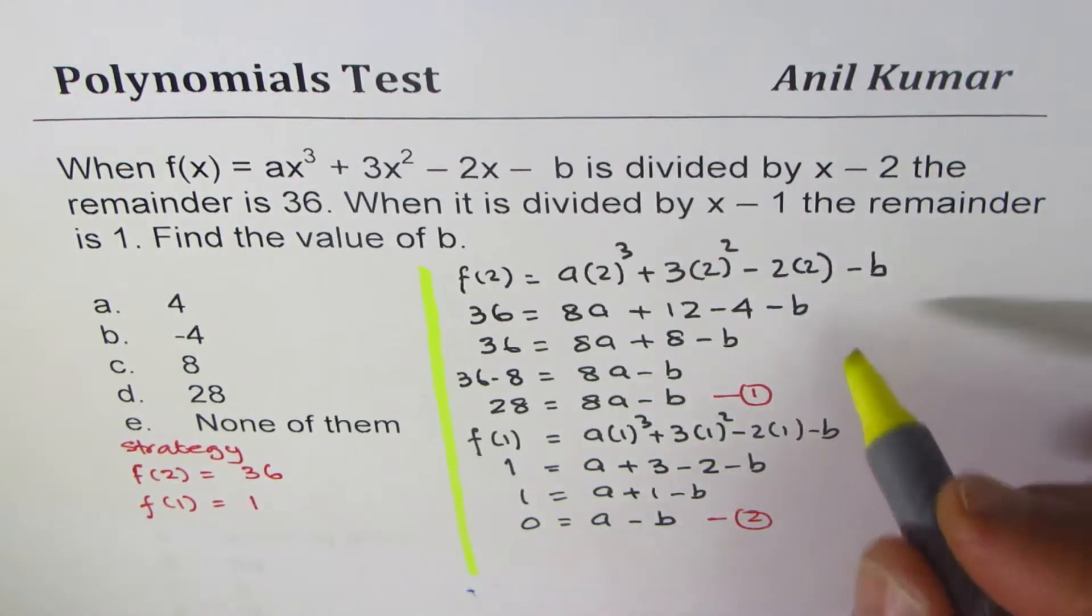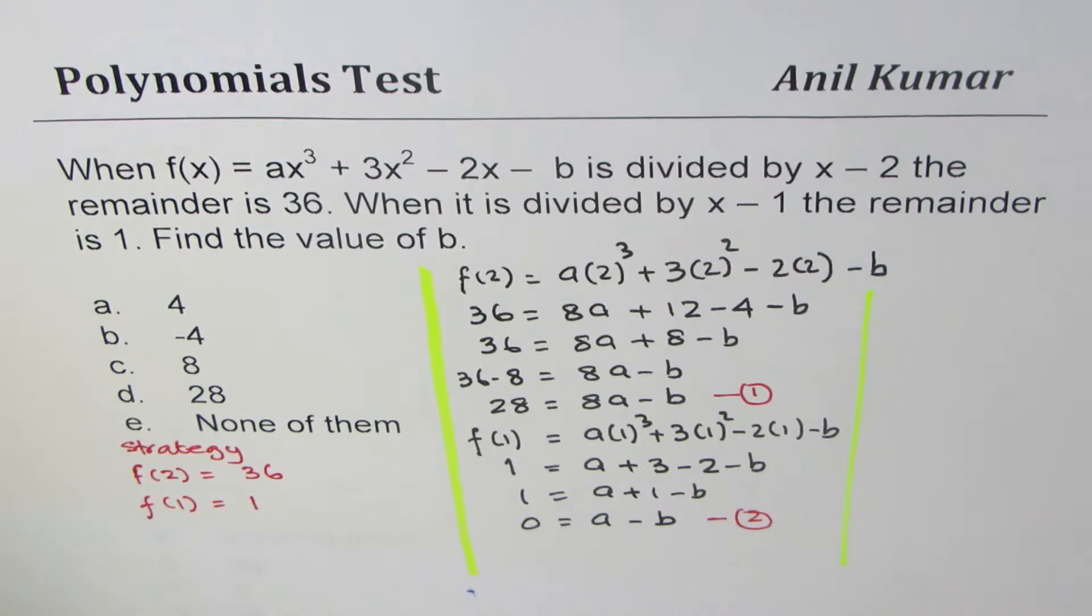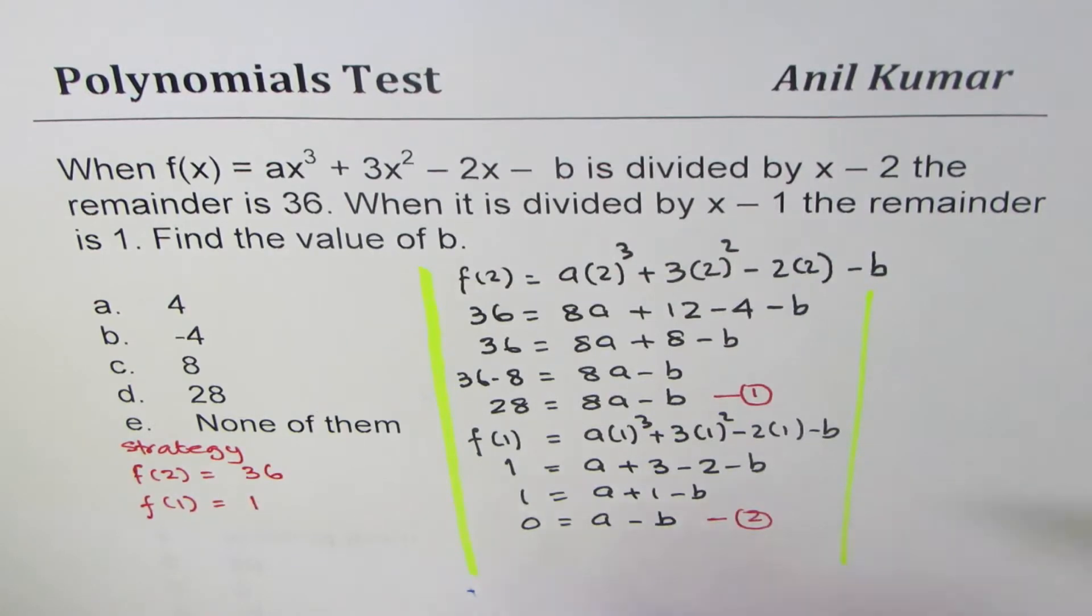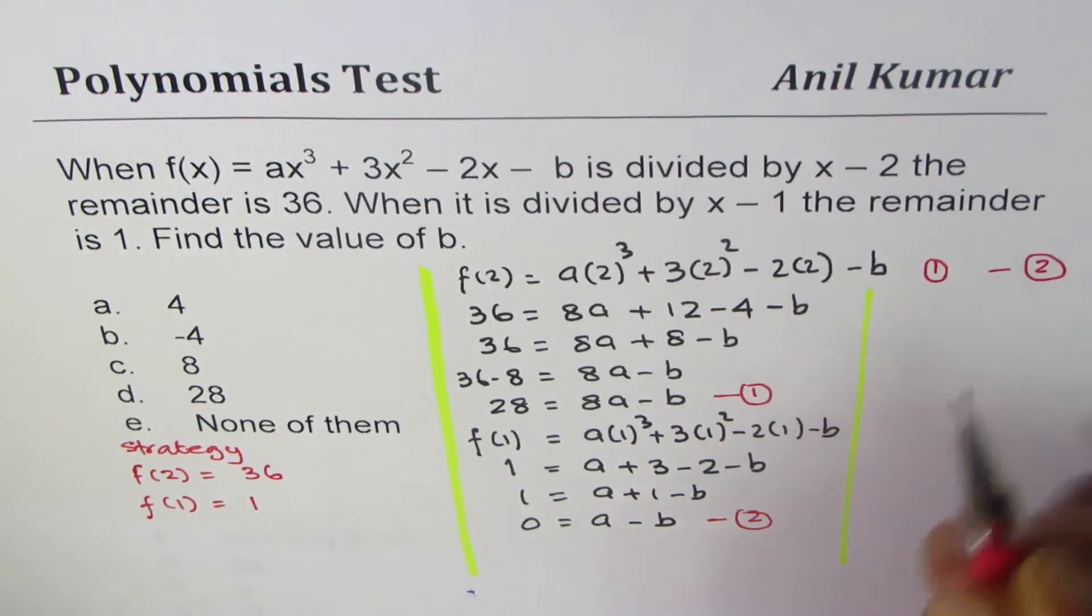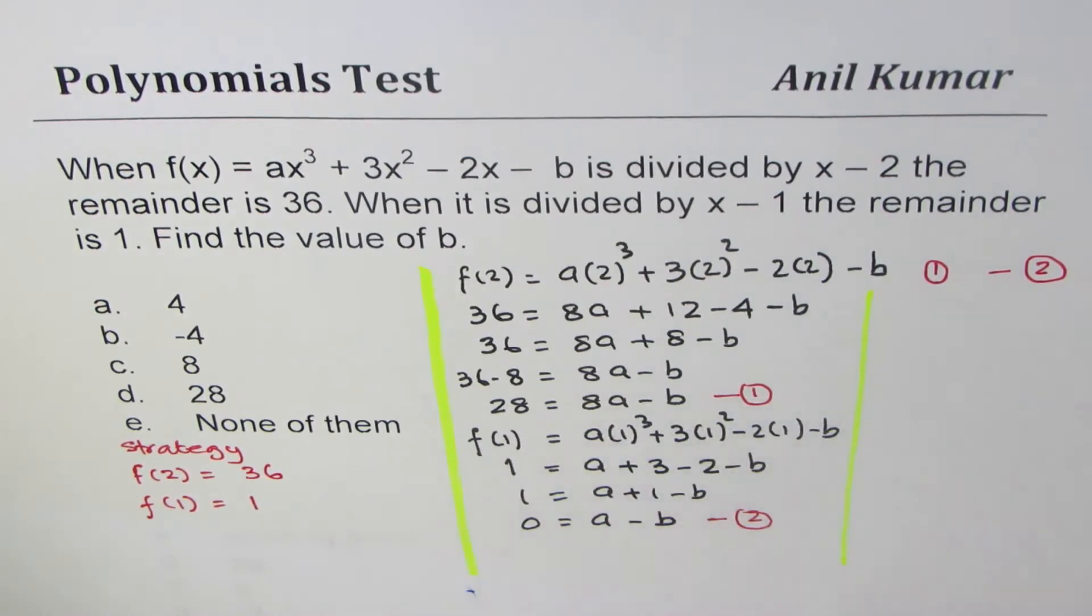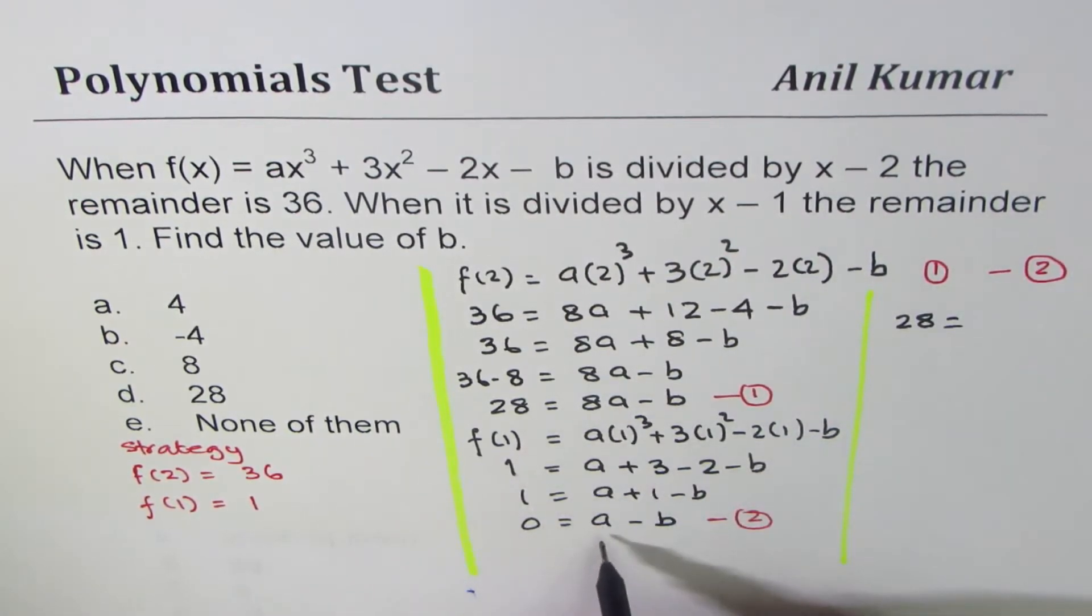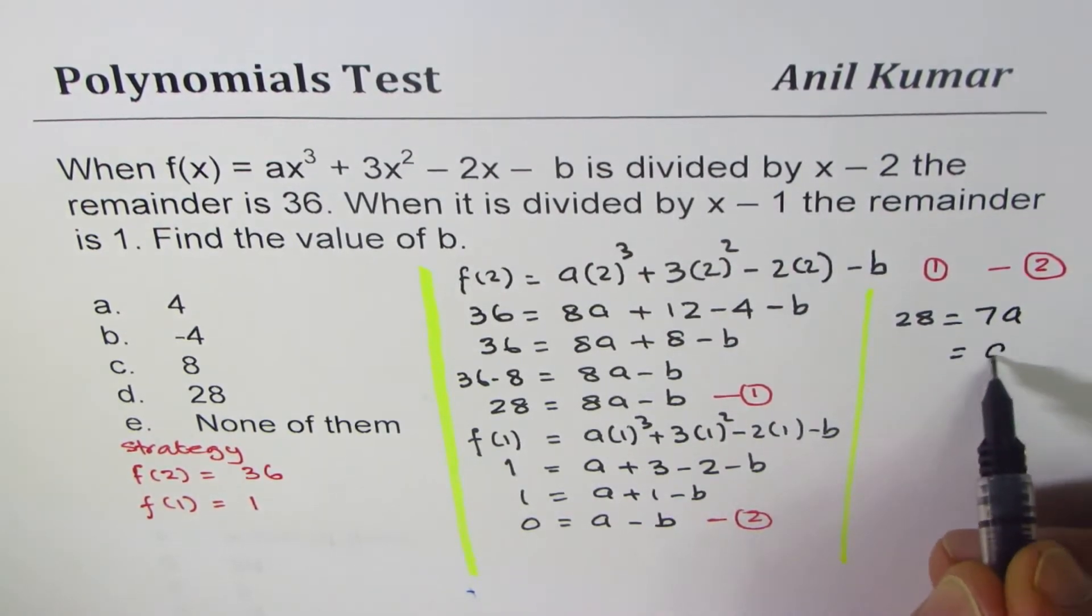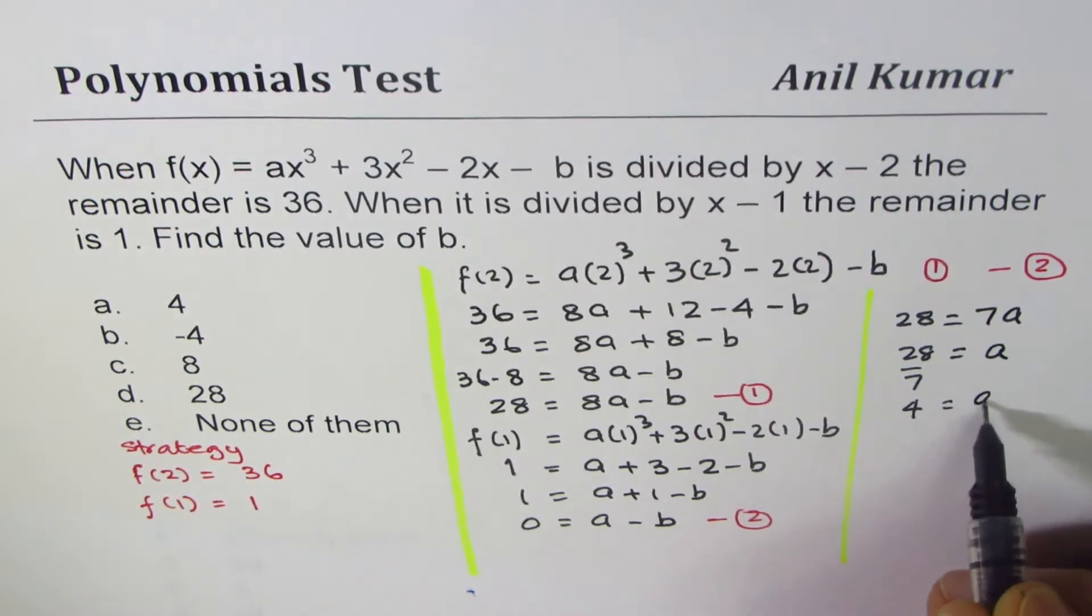Now if I subtract one equation from the other, equation 1 minus equation 2, I can find the value of a. So 28 - 0 = 28, and 8a - a = 7a, while the -b terms cancel out. So we get 7a = 28, or a = 4.